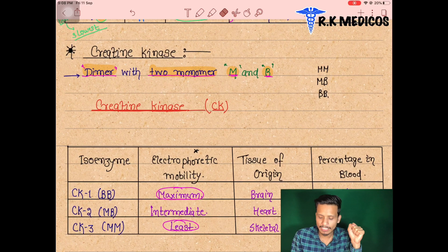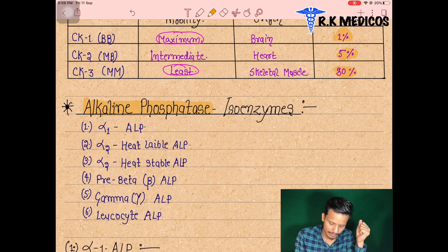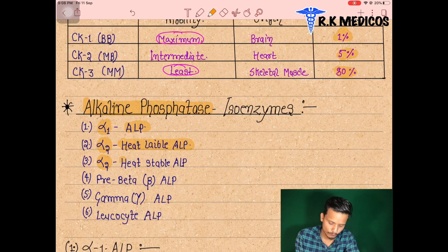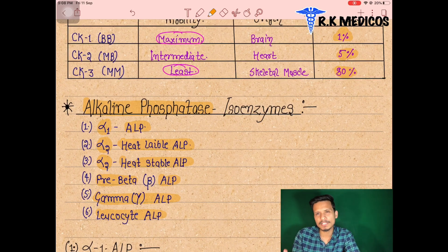The blood percentages for CK isoforms are approximately 1%, 5%, and 80% respectively. Next is alkaline phosphatase (ALP), which also exists as isoenzymes. Alkaline phosphatase appears in six forms in our body.